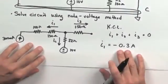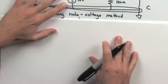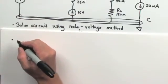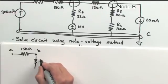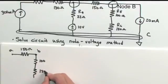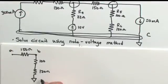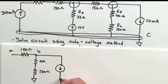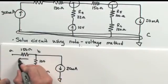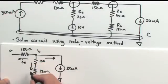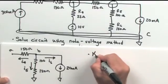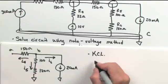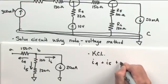Now we need to develop a node equation for node B. Sketching out all elements connected to node B: a 150 ohm resistor connecting to node A, a 100 ohm and 120 ohm resistor in series connecting down to node C at zero volts, and a 20 milliamp supply also connected down to the zero voltage reference. Again, I'll assume all currents are leaving node B when writing the node voltage equations, so I4 plus I5 plus I6 must sum to zero.